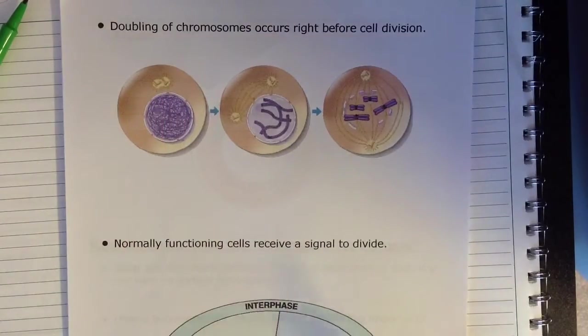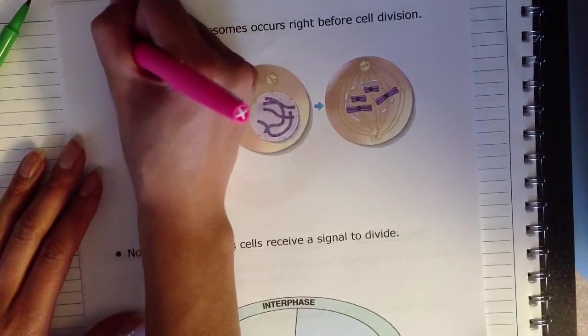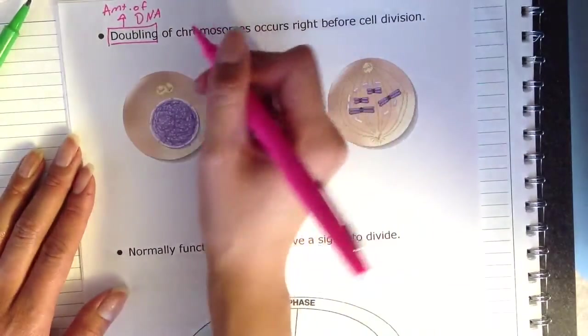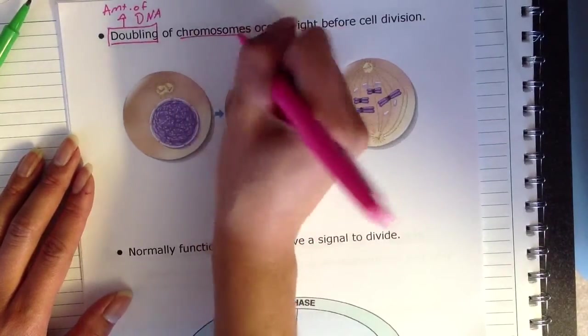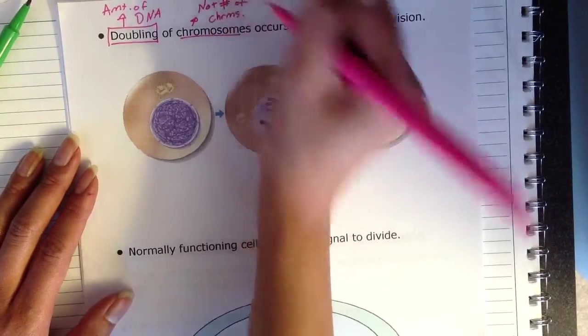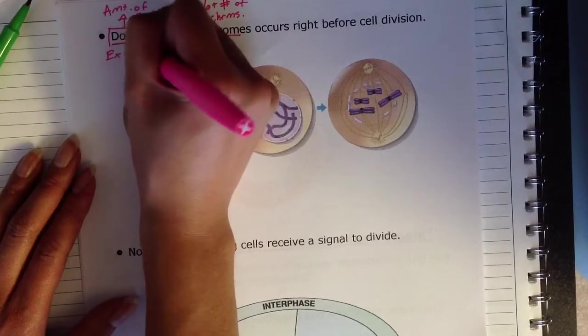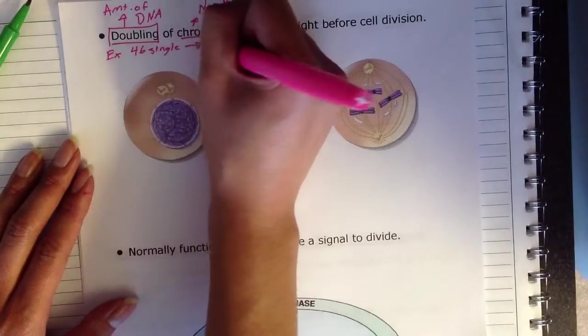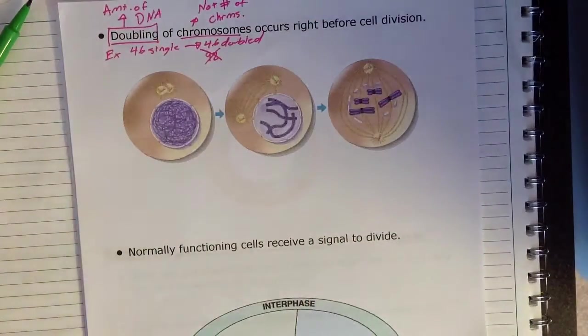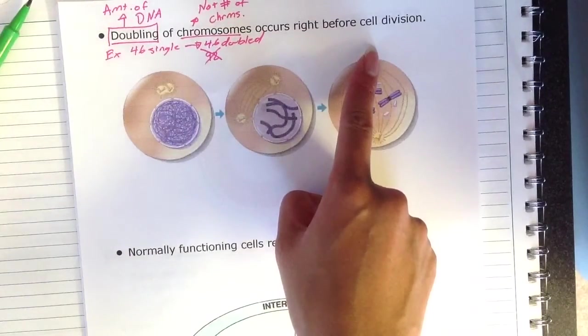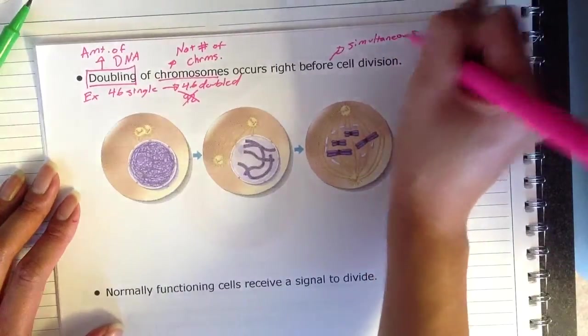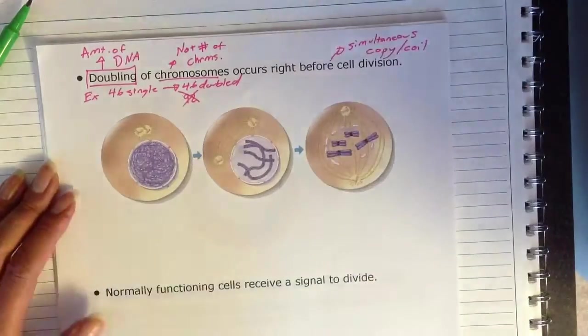And so doubling of chromosomes occur right before cell division. So we're literally going to double the amounts of DNA. And when we talk about the doubling of chromosomes, it's not going to be the number of chromosomes that are doubled. For example, when we double chromosomes, we'll have 46 single chromosomes become 46 doubled chromosomes. We would never say that I have 92 chromosomes. 92 would be wrong. And so all of this is going to occur right before cell division, and it's actually also going to occur simultaneously. The copying and the coiling of the chromosomes will occur simultaneously.